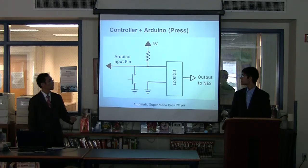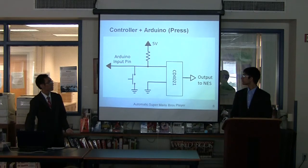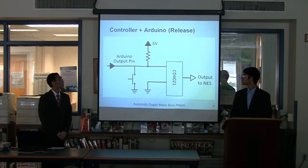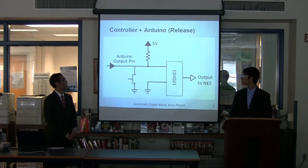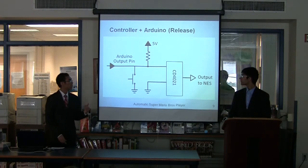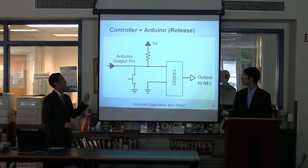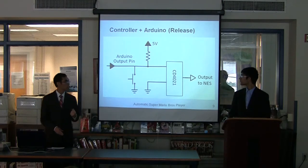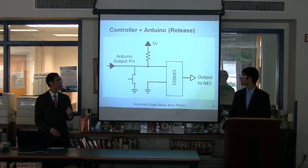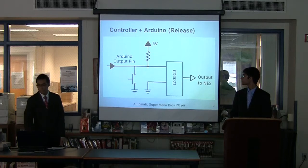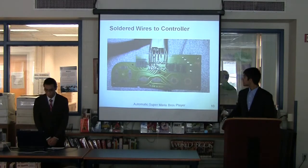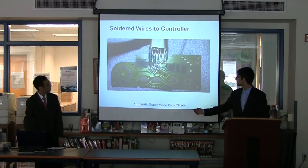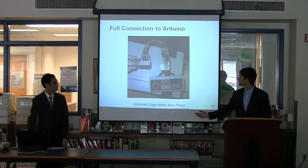So when we connect the button pins to our Arduino and want to press a button, we set it as an input pin, because that has the same effect as grounding the pin. As a result, the pin on the shift register will be pulled low, and the NES will recognize that the button is being pressed. When we want to release the button, we set the Arduino pin to be an output pin, which has the same effect as not pressing the button, and the button pin on the shift register is pulled high, outputting to the NES as a button being released. This is a picture of how we soldered the buttons on the controller, and this is a picture of our full connection scheme.